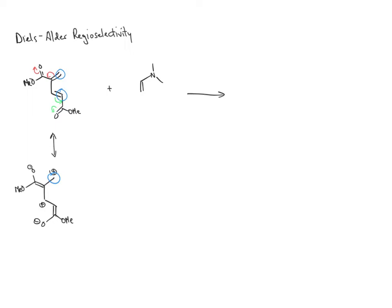Now let's look at the dienophile. It has an electron donating group, and we want to determine which of the two carbon atoms will be the most delta minus, because in this inverse electron demand Diels-Alder reaction we use the dienophile as the HOMO. To figure that out, we use the fact that there are lone pairs on nitrogen that push electron density into the ring and into the double bond, generating a Lewis structure showing that the bottom carbon atom will be more delta minus.